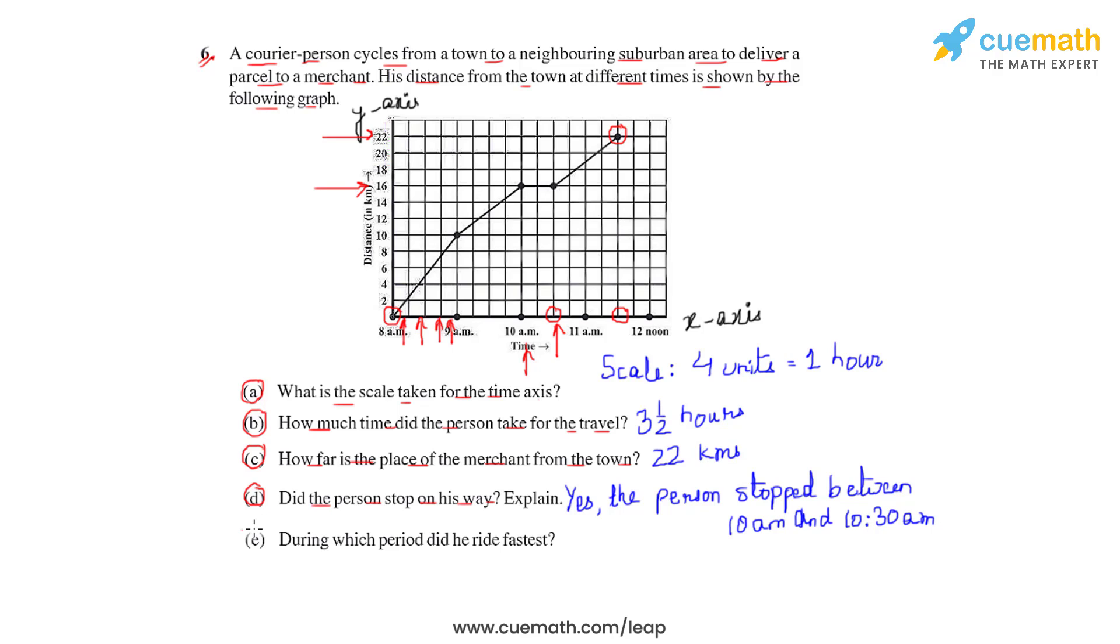Let us now move on to question (e), where we'll have to find out the time period when he rode the fastest. As we see, he covered 10 kilometers between 8 am and 9 am. He covered 6 kilometers between 9 am to 10 am.